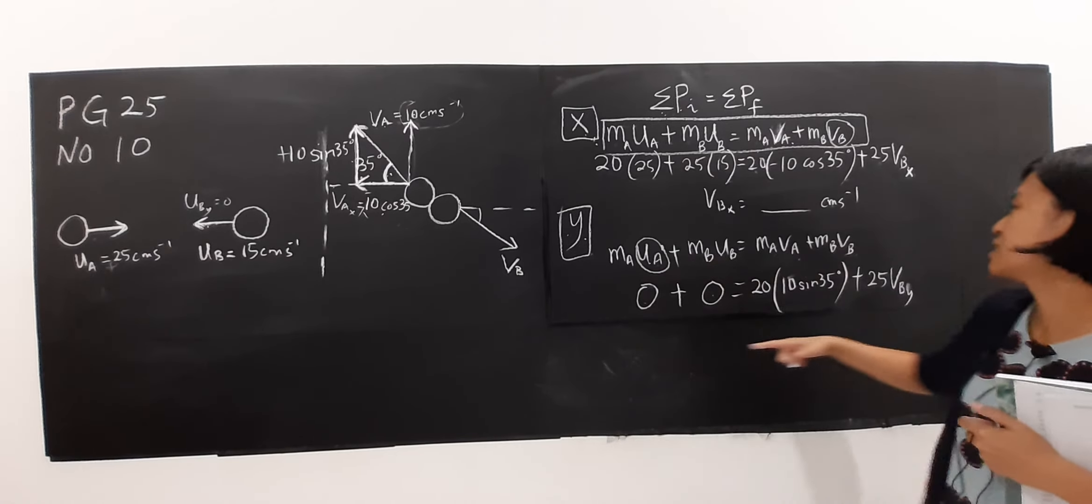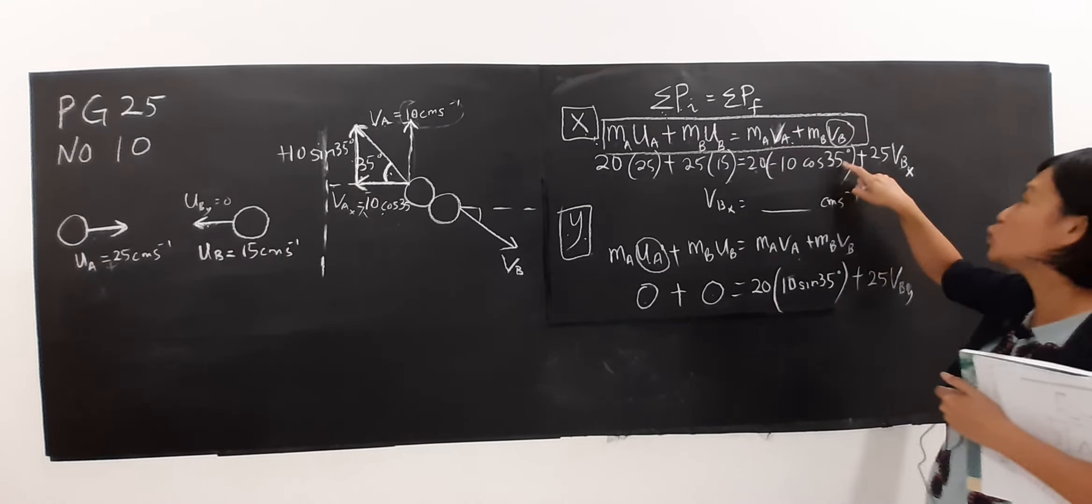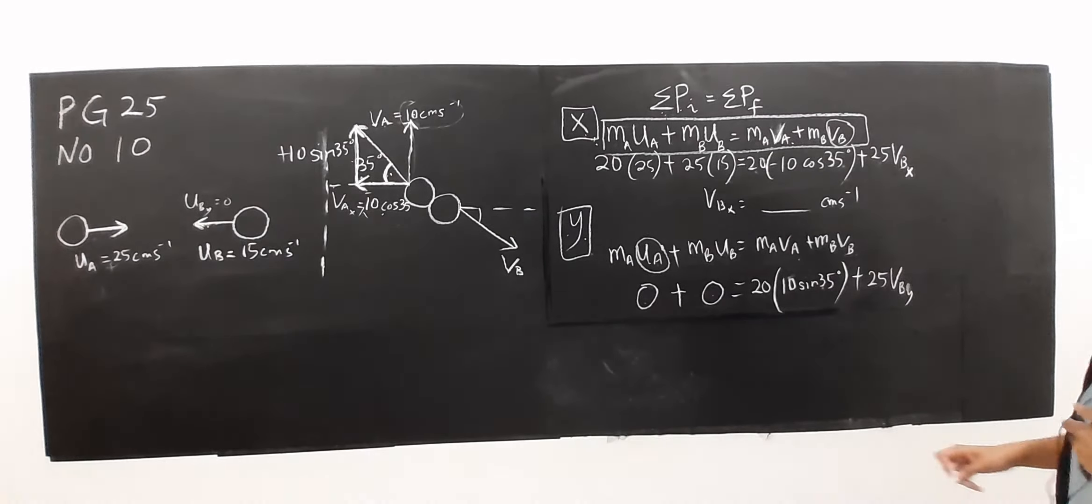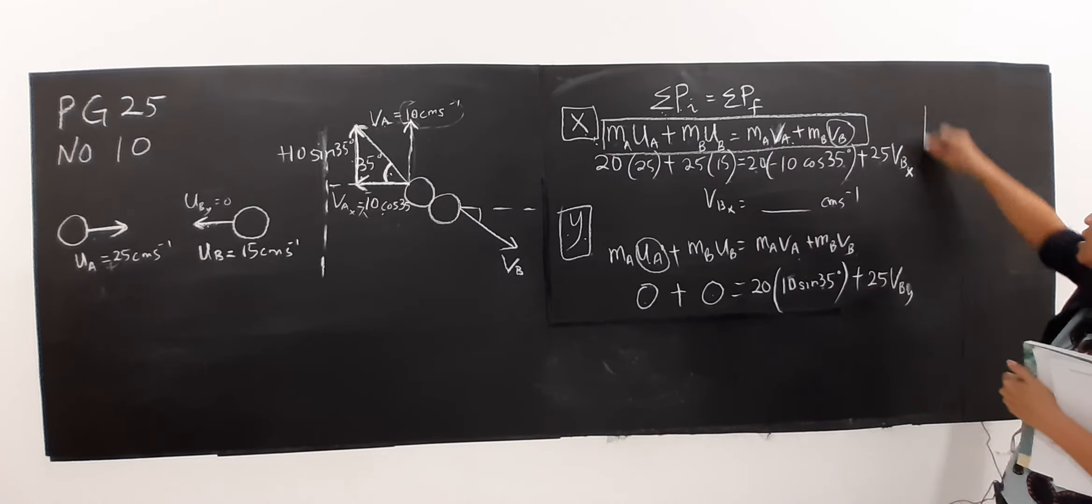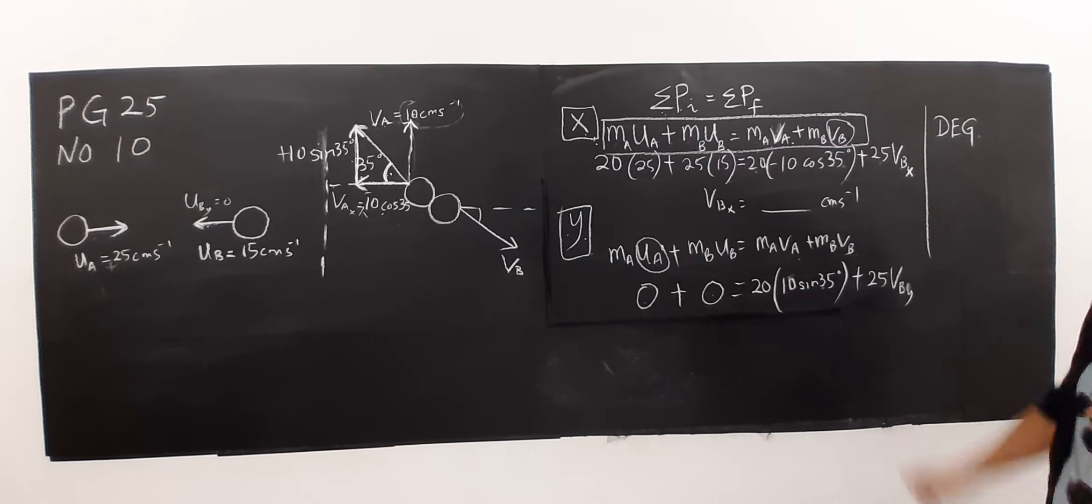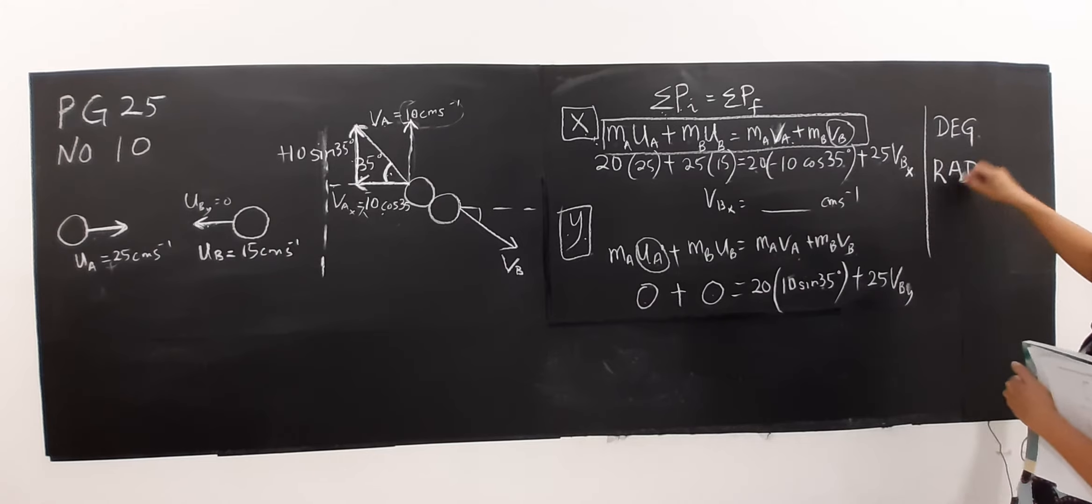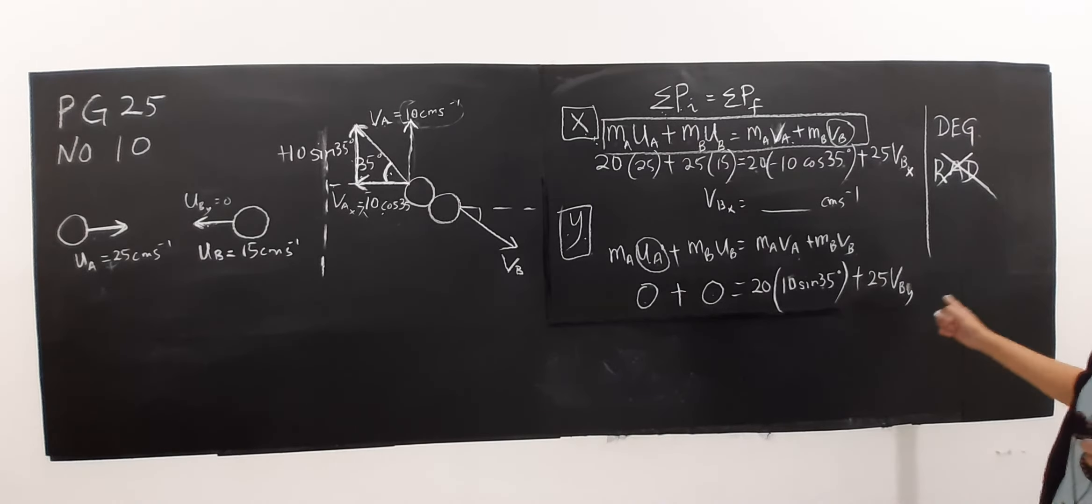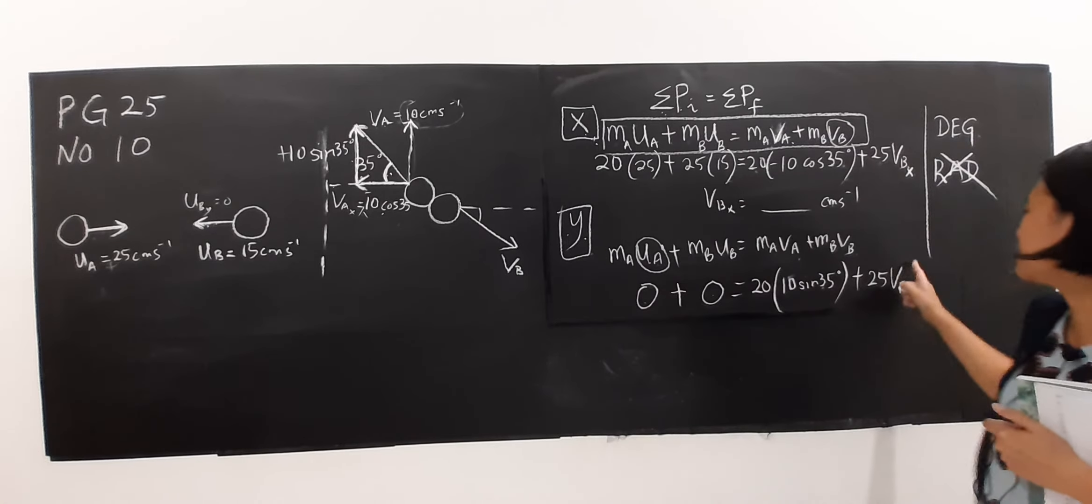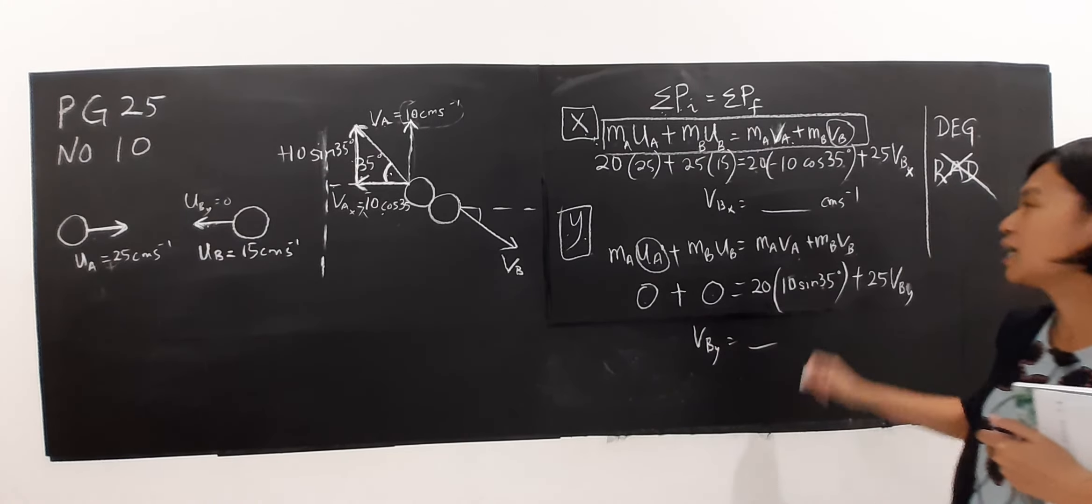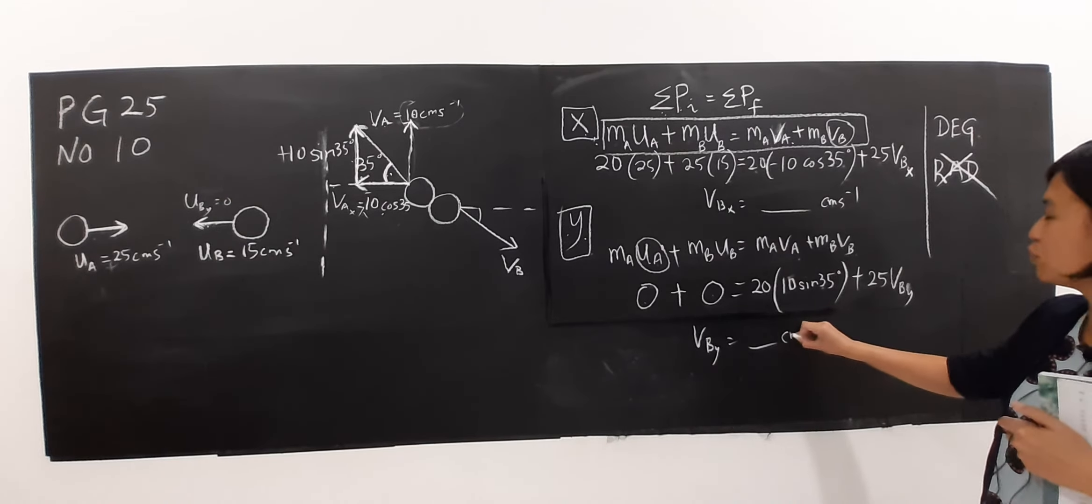So when you solve this, remember this angle is in degree. Make sure your calculator mode is in degree, not radian. So you see in the equation there's one unknown, then you can solve for VBY in this unit.